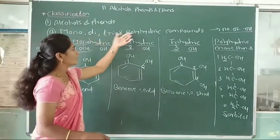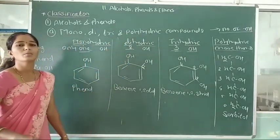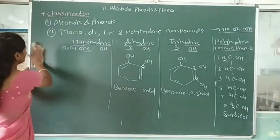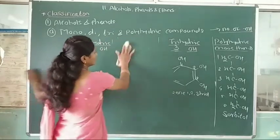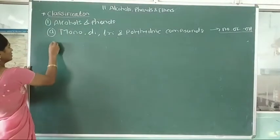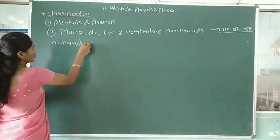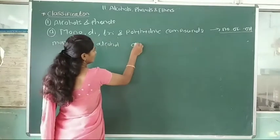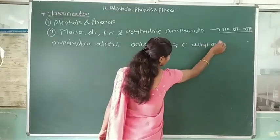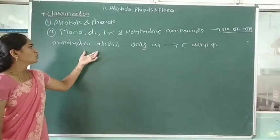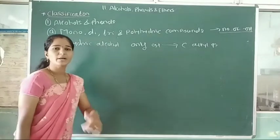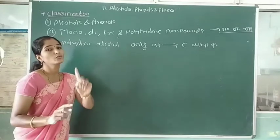This is the first classification of alcohol and phenol — monohydric, dihydric, trihydric, and polyhydric compounds on the basis of the number of hydroxy groups attached to carbon atoms. Monohydric alcohols are further classified into two types on the basis of the hybridization state of the carbon atom to which the OH group is attached.